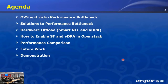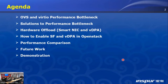First, I will explain OVS and VirtIO bottlenecks, then show you some feasible solutions to them. Second, I will talk about hardware offload technologies including SmartNIC, VDPA, and Scalable Functions, as well as how we enabled them in OpenStack. Third, I will compare performance data we have gotten from normal NIC and SmartNIC and show you some future work we will do.